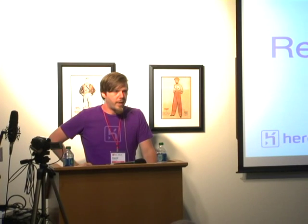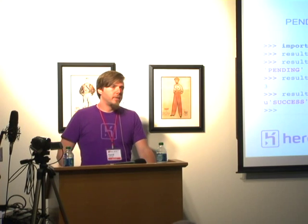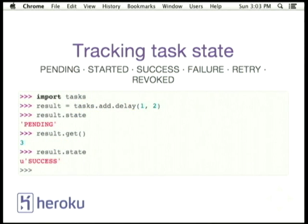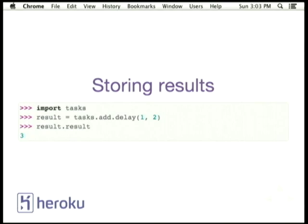A lot of people focus on their choice for the Celery broker, but they overlook the result backend as an architectural choice. The result backend is really important for these workflows, so it's worth taking some time to talk about what it does and which one you should choose. First of all, the result backend is in charge of tracking task state. When a task is sent to a broker, Celery marks a task as pending. When it's started by a worker it's marked started, then success or fail. You need a result backend in order to know what state a task is in, and of course to know what value or object the function returned.